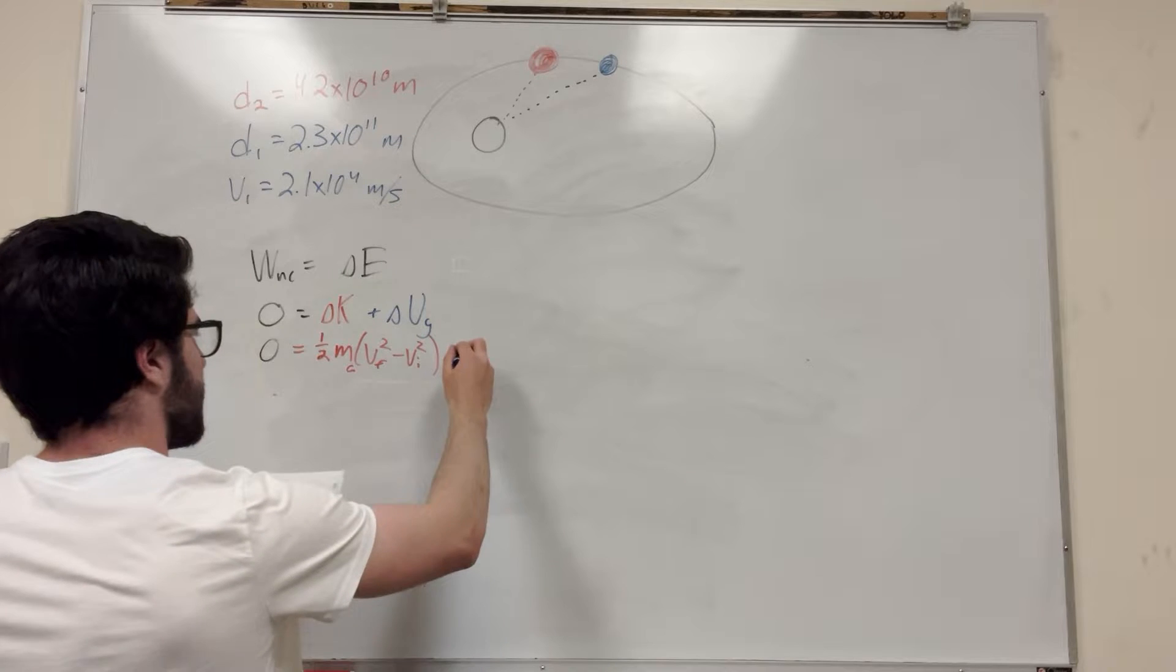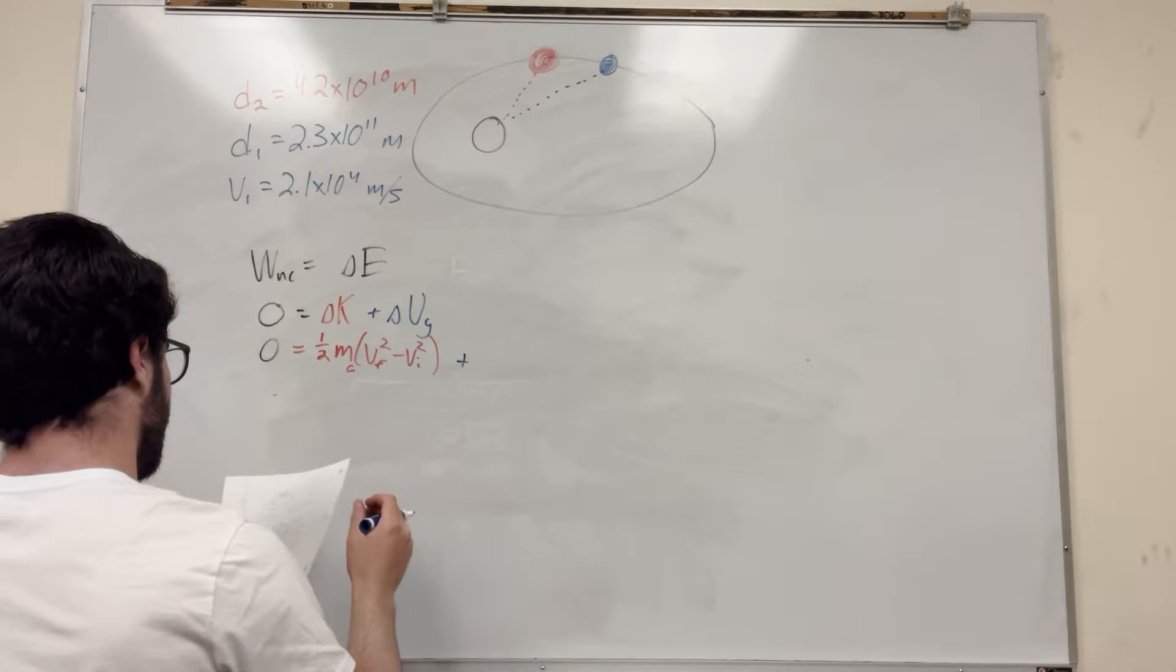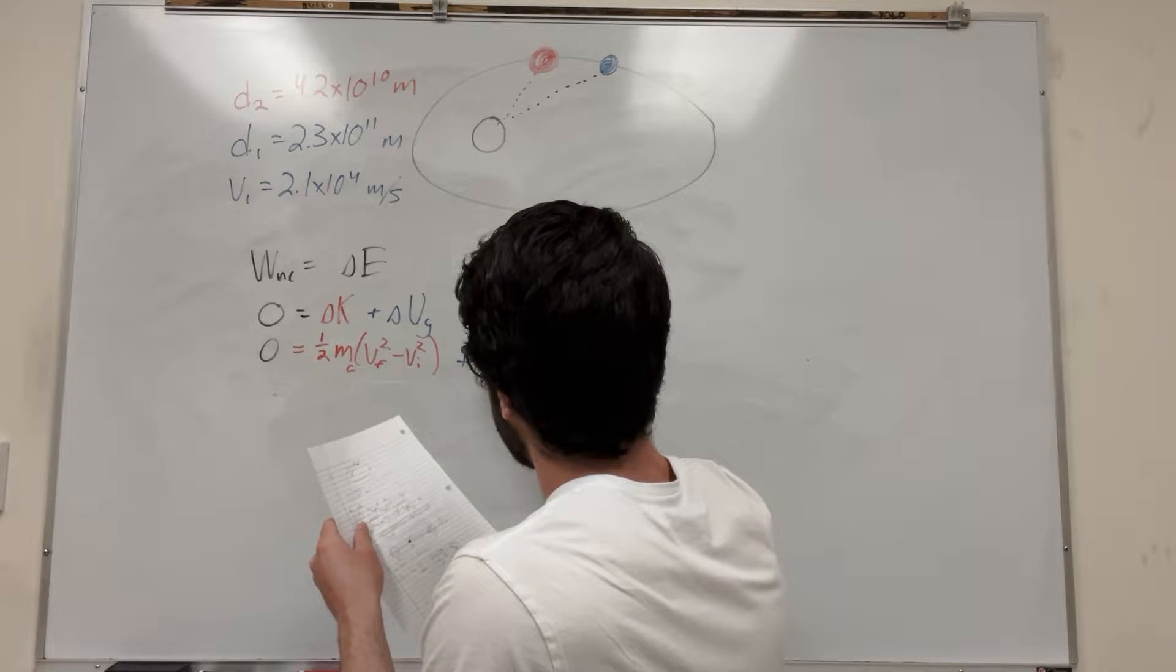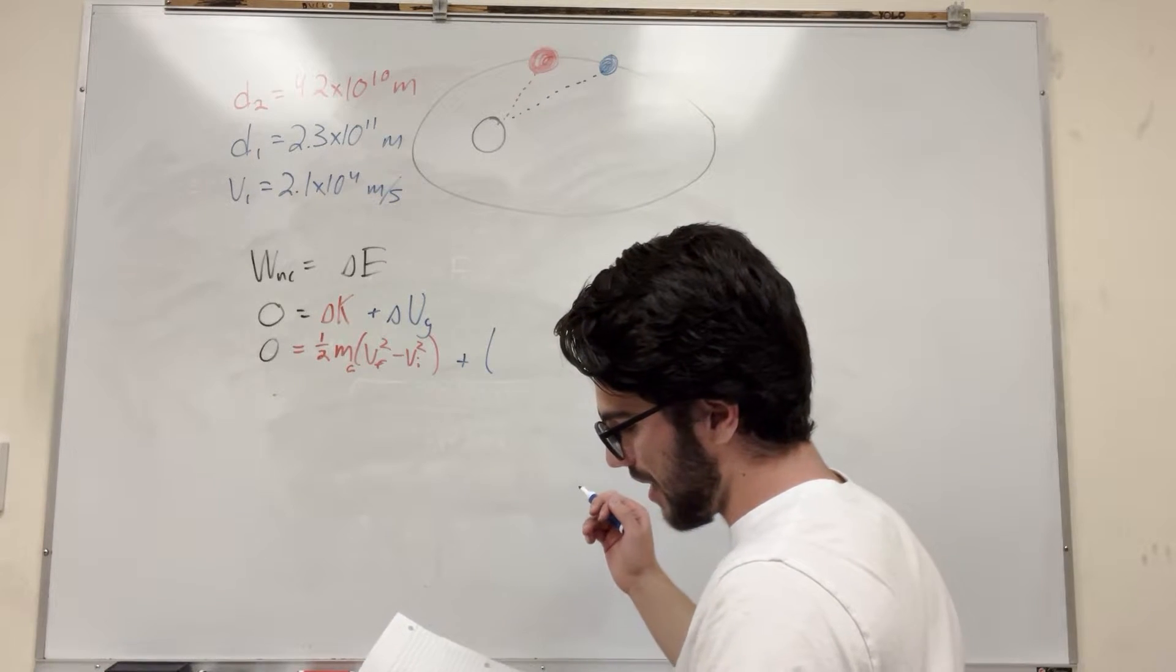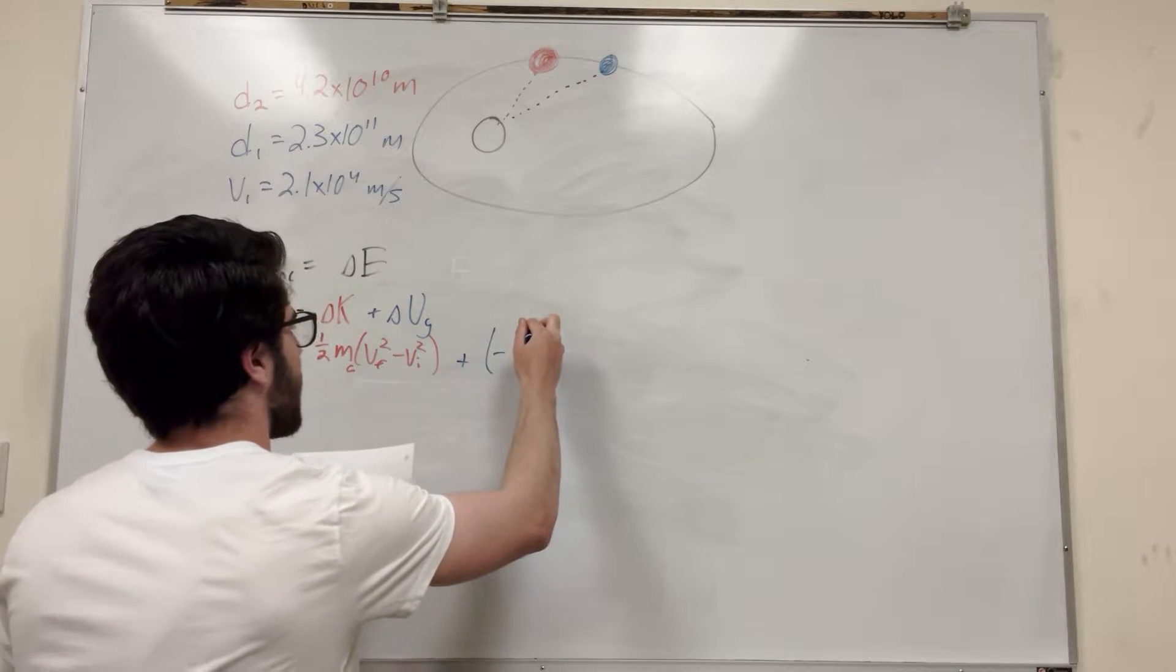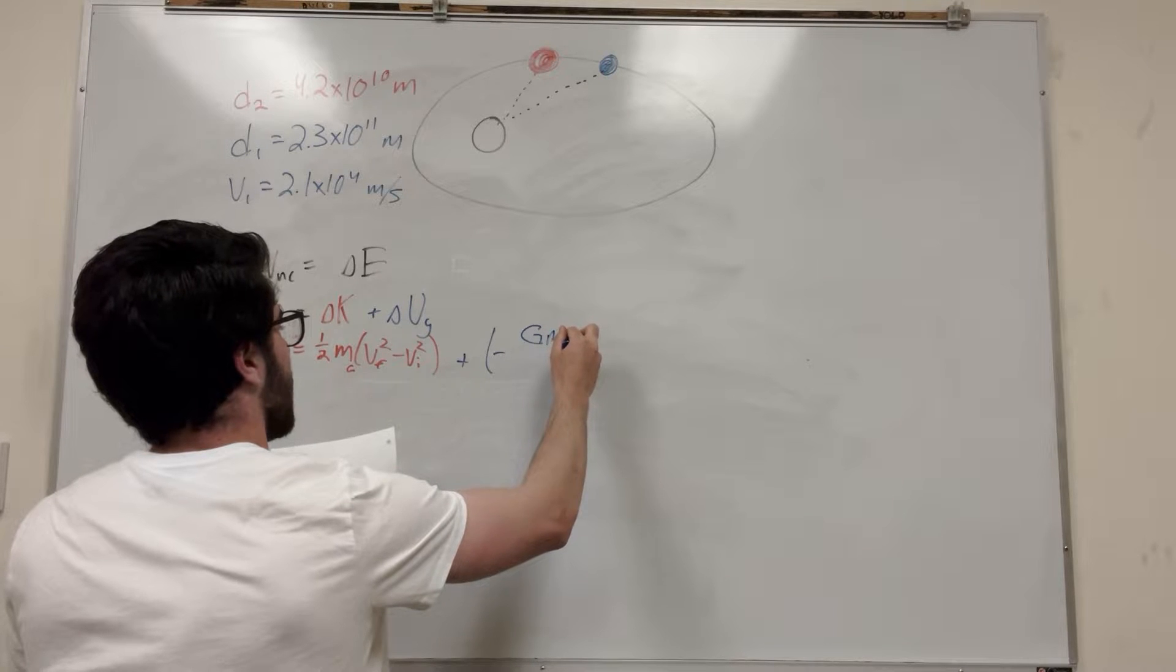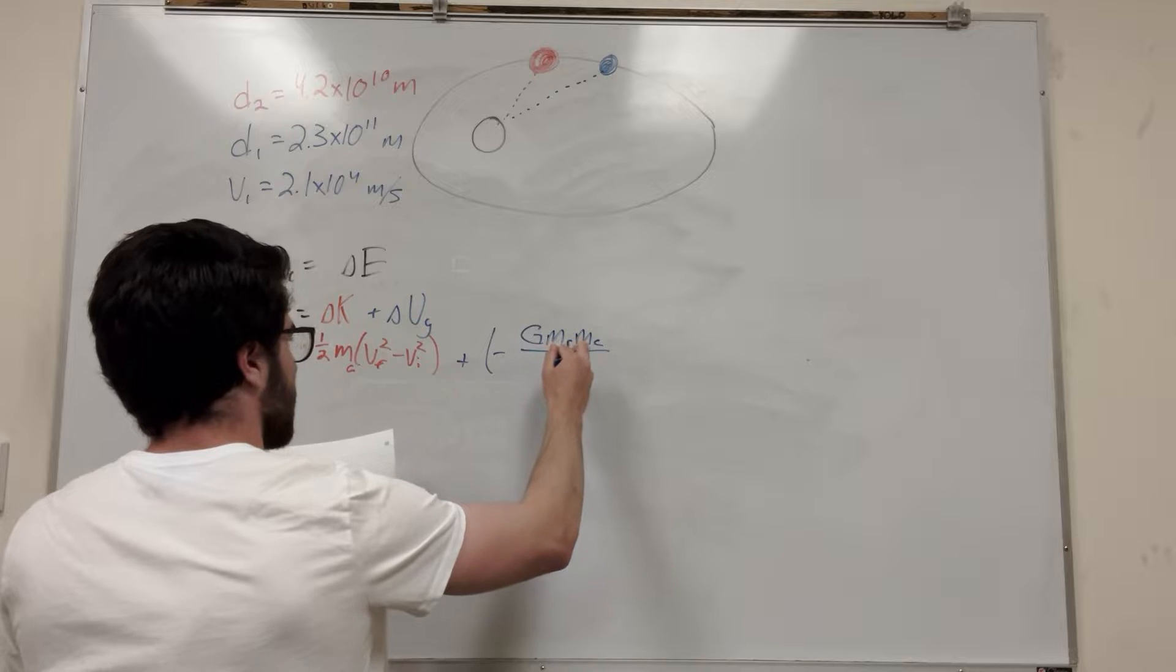And then gravitational potential energy, we're going to need to use not, you know, whatever mass, gravity, height. We're going to need to use a different formula. So it's going to be negative. So usually it would be positive. It would be the final minus initial, and that's what we're doing. But it's a negative, it comes out front of the system, so it's kind of weird.